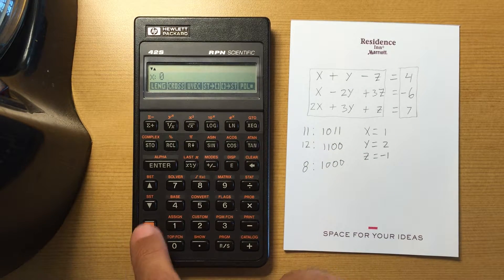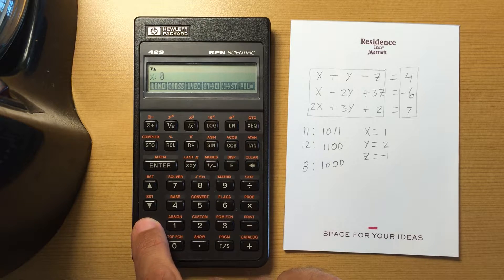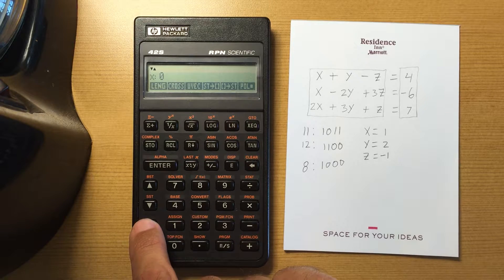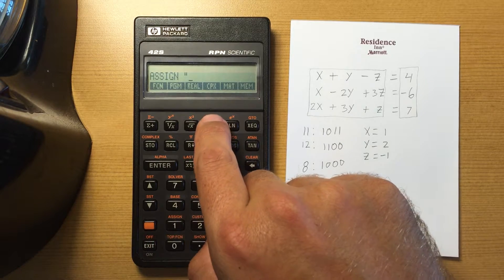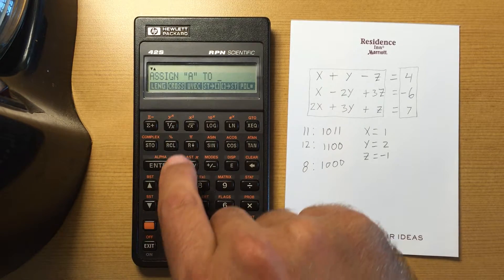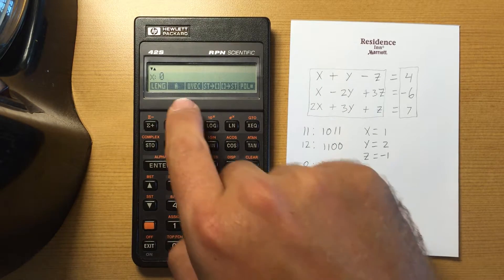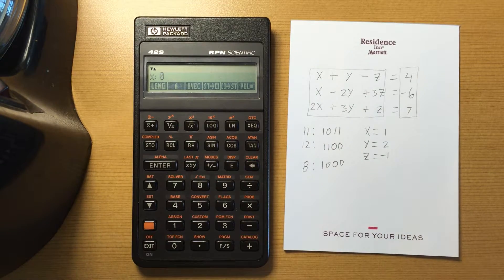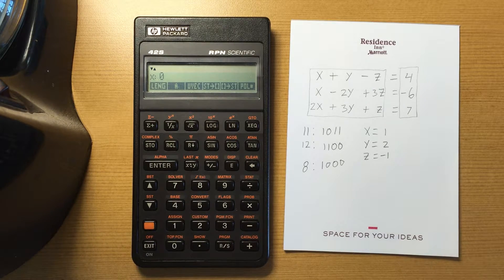Now I want to assign maybe a complex variable since maybe I'm going to be recalling that a lot. So I assign, go to complex, assign that to this button in my custom menu.